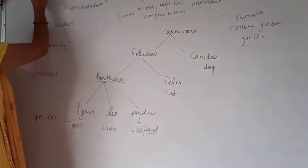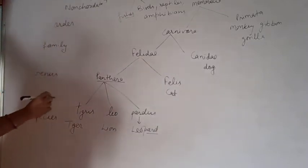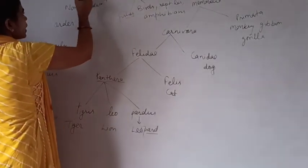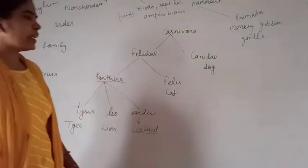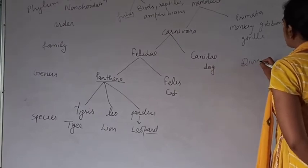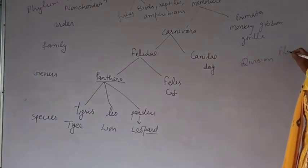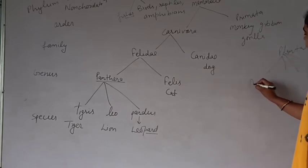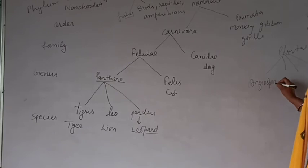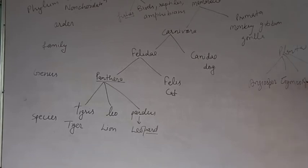All these animals belong to kingdom Animalia and phylum Chordata. In the case of plants, we use the word 'Division.' Kingdom Plantae is divided into divisions: Angiosperms, Gymnosperms, Pteridophyta, Bryophyta, and Thallophyta. All these divisions collectively form kingdom Plantae.